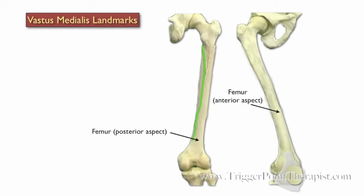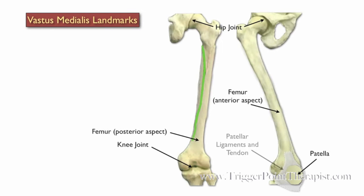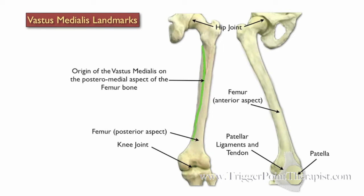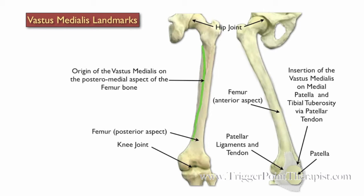First we'll take a look at the landmarks for the vastus medialis. On the right we have the anterior view of the femur and on the left we have the posterior view of the femur. The knee joint, the hip joint, the patella, and here we have the patellar ligaments and tendon. The vastus medialis originates on the posterior medial aspect of the femur and inserts on the medial patella and tibial tuberosity via the patellar tendon.